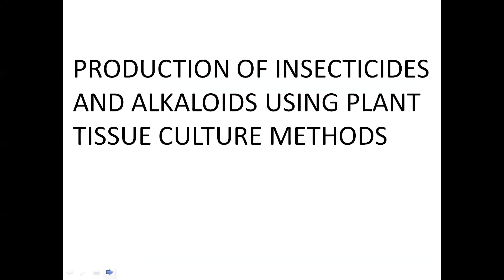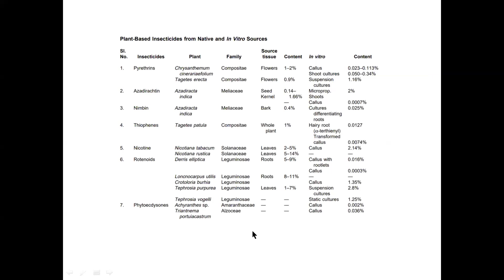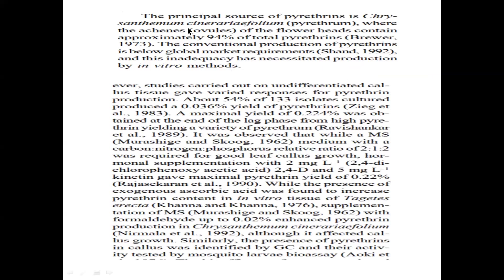We will now see the production of insecticides and alkaloids using plant tissue culture methods. These are different insecticides produced using different explant sources, and the content yield is also given in this table. The most important ones are pyrethrin, azadirachtin, and nimbin — all very common organic insecticides produced using plant tissue culture methods.